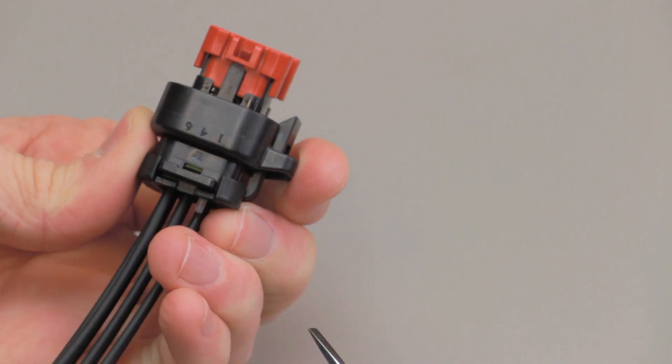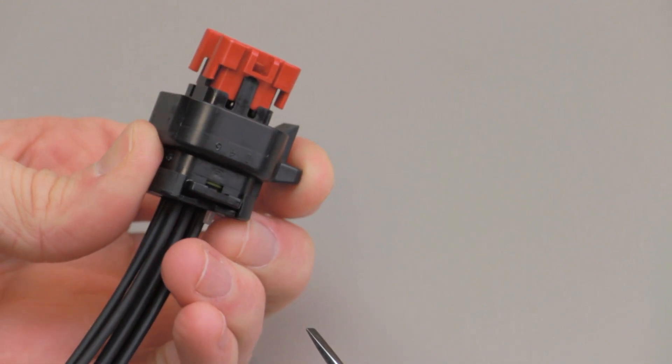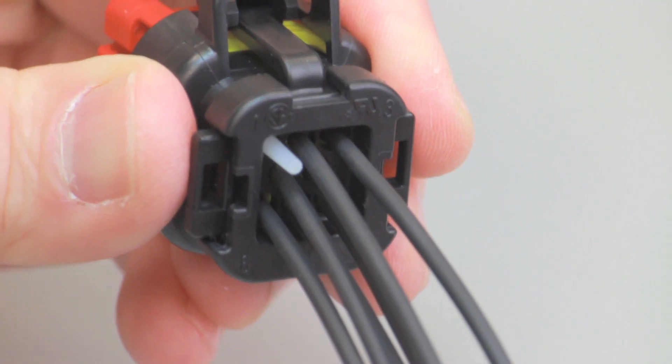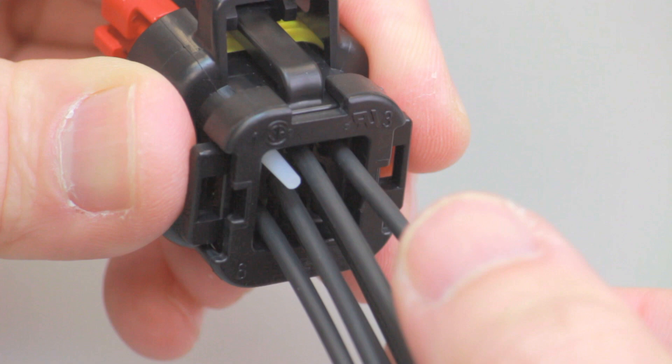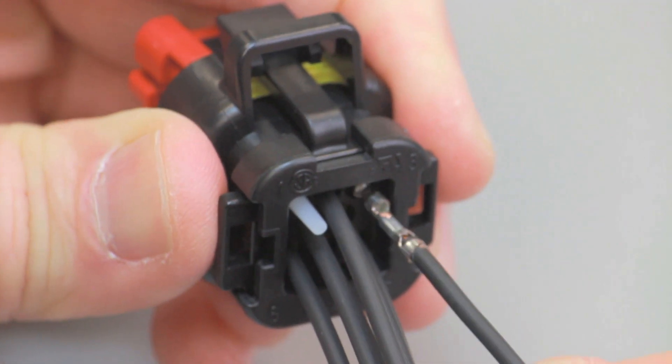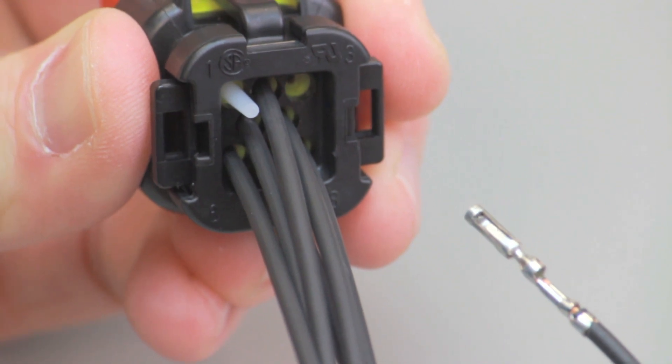If necessary, repeat the process for the opposite corner of the wedge. To remove the contacts from the receptacle contact housing, rotate the wire back and forth over a half turn while gently pulling the wire until the contact is removed. Repeat this process until all of the contacts have been removed.